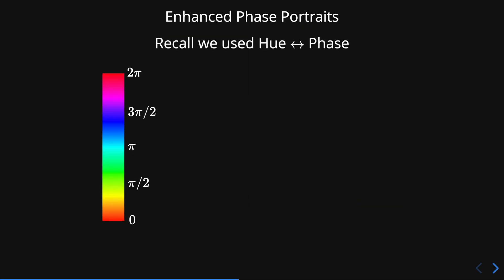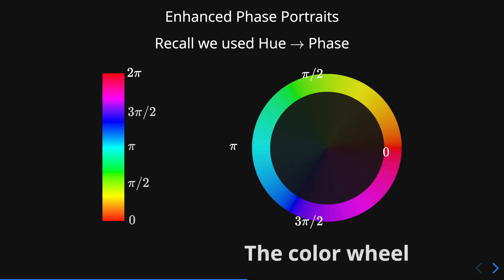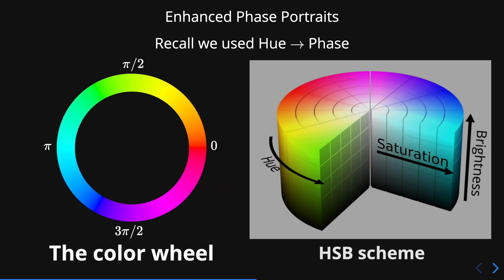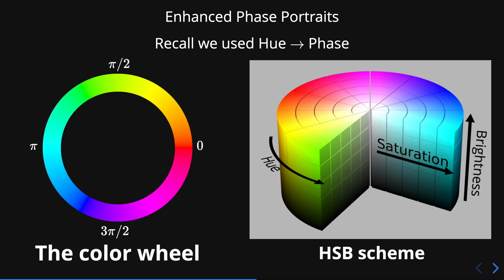Recall that we use the hue to match the values of the phase from 0 to 2 pi. Instead of using an interval, we can wrap those values to obtain the color wheel. And in fact, we can introduce two more components by considering the HSB scheme to obtain the enhanced phase portraits of complex functions.